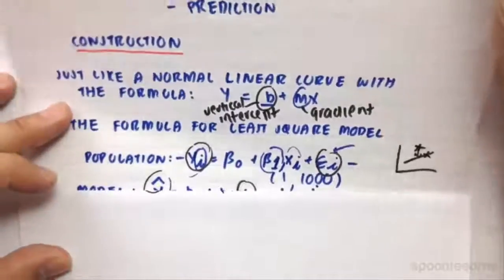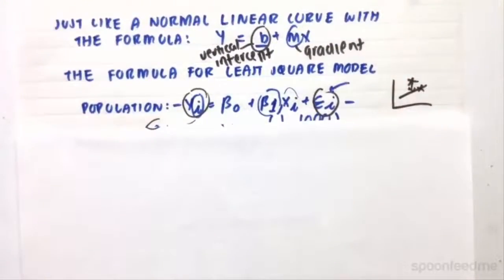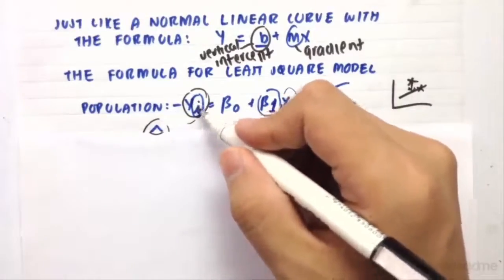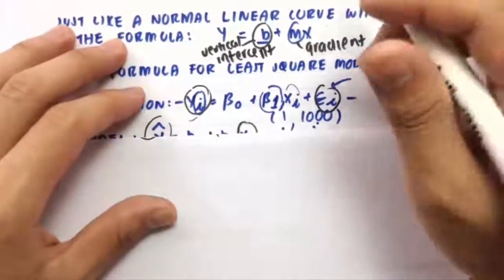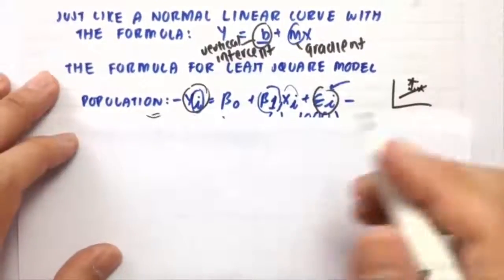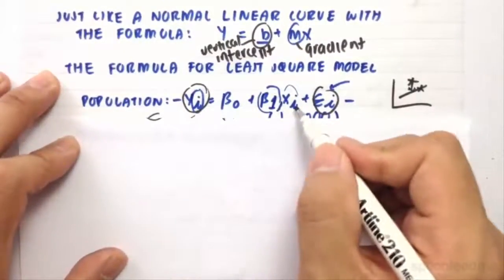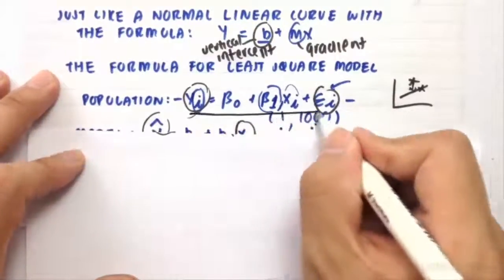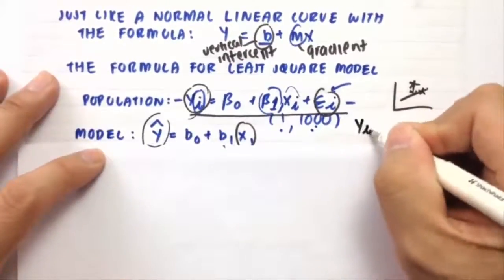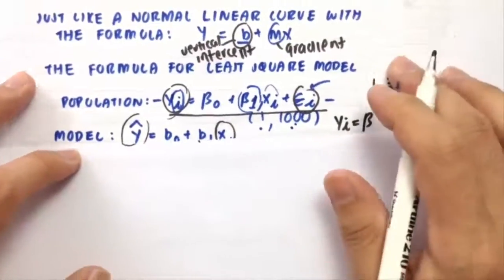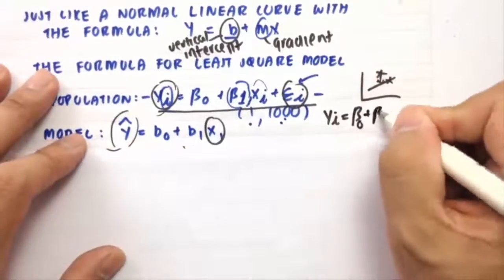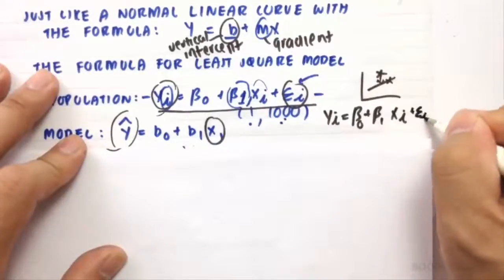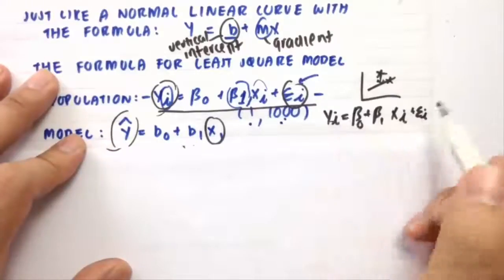So the formula for the least square model is similar, but it's still a little bit different. So the population is still y, so y with a subscript i. The subscript i means that it's related to the data point of subscript x, so x with i. So the population regression model is y subscript i equals to the parameter beta 0 plus capital beta 1 xi. So these two are related points. That's why they have corresponding i's plus a disturbance term i, which is also associated with these two data points.